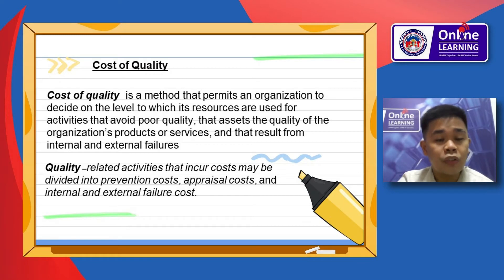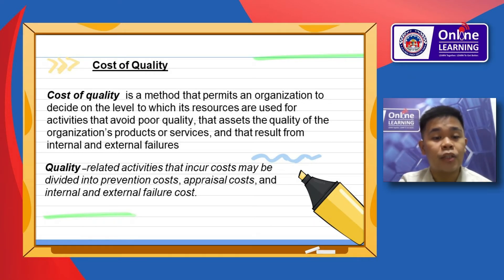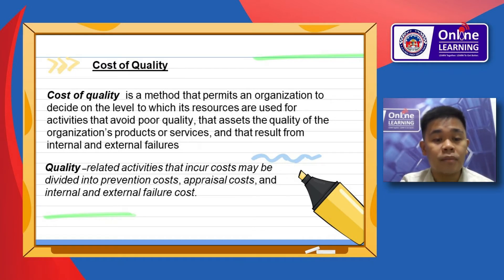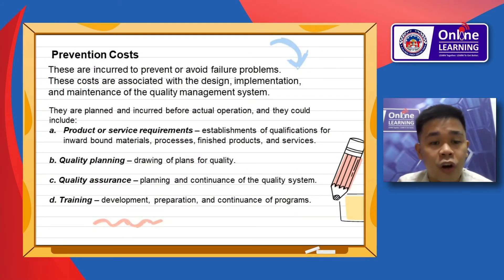For the cost of quality: cost of quality is a method that permits an organization to decide the level to which its resources are used for activities that avoid poor quality, that assess the quality of the organization's products or services. Quality-related activities that incur costs may be divided into prevention costs, appraisal costs, and internal and external failure costs.